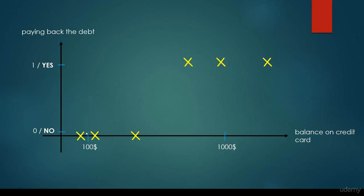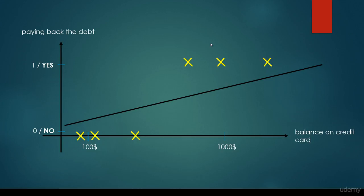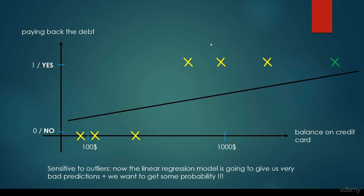If there is a little amount of credit on the credit card, of course there's a higher probability that the given person will default. If there is lots and lots of money on the credit card, of course there's a high probability that the given person is not going to default. So if we use linear regression for these kinds of situations, it's not going to work that fine. First of all, because it is very sensitive to outliers. The linear regression model is going to give us very bad predictions. And what's more important is that we would like to get some probability — for example, what's the probability that if we have $1200 on our credit card, we are going to default?